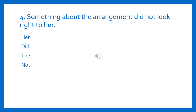Sentence number four: 'Something about the arrangement did not look right to her.' We have four options — let's see whether you can find the pronoun. Our pronoun is 'her.' Her is the third person singular personal pronoun.